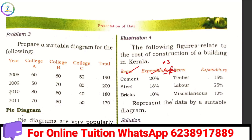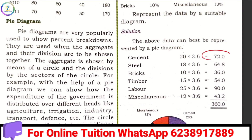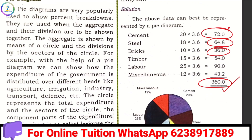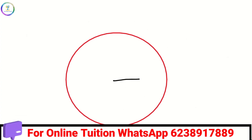The percentage is multiplied by 3.6 to get the angle. For example, cement is 20%, so the angle is 72 degrees. What we do is draw a circle and add a radius to the circle.